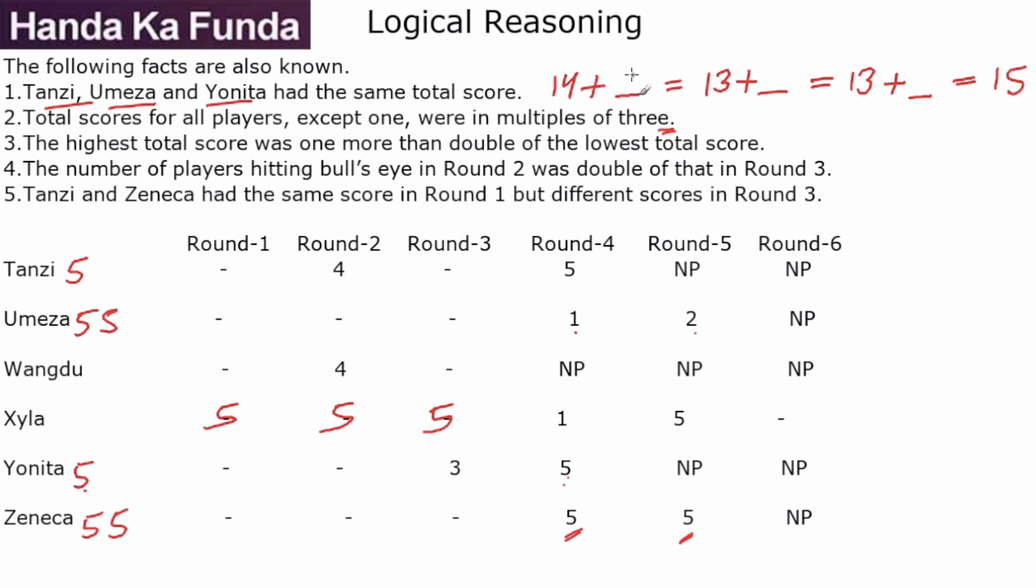And if the score should be 15, we know Tanzi must score 1 in the other round. So it is 5, 1. Now this could be 5, this could be 1, this could be 1, this could be 5. I don't know, but the two rounds are 5, 1. For Umeza, it should be 13 plus 2. So Umeza's three rounds are 5, 5, 2. Once again, the order is not known. And for Yonita also, the missing score is 2. So for Yonita, this will be 5, 2.